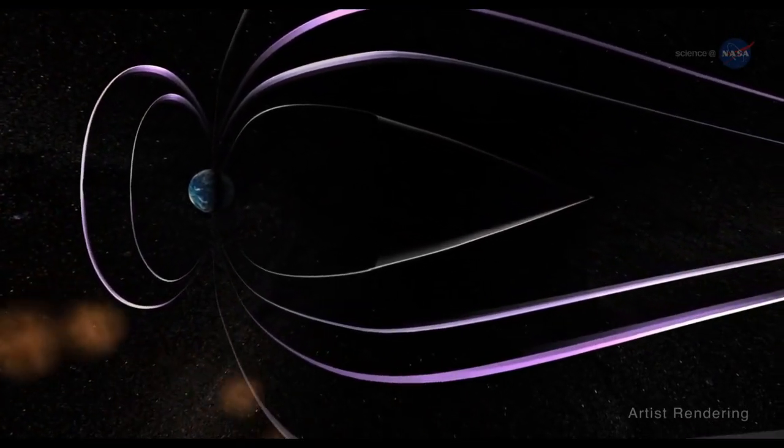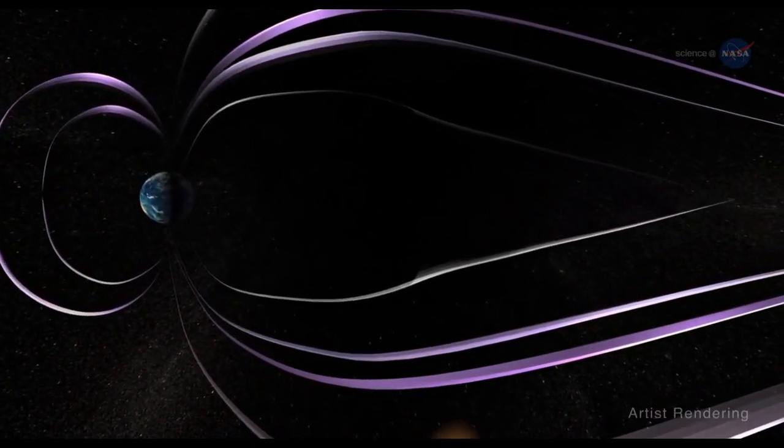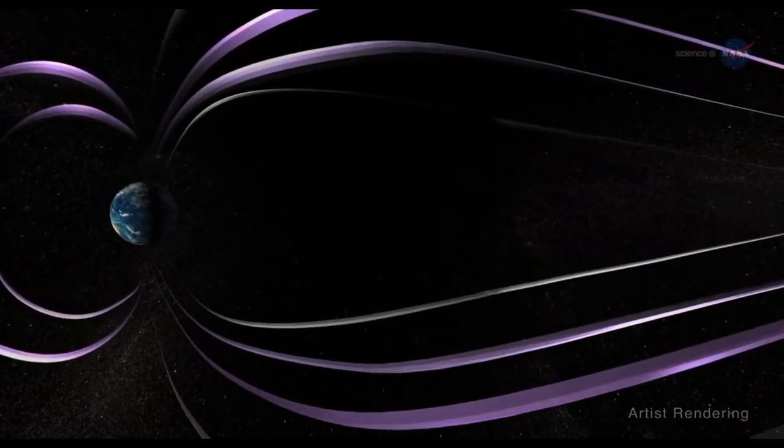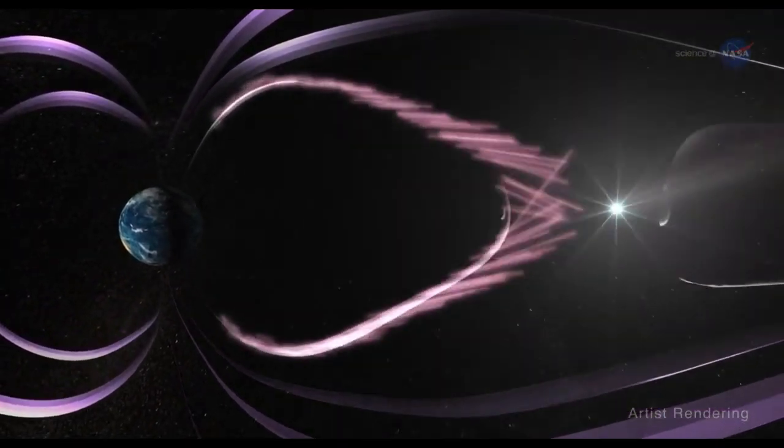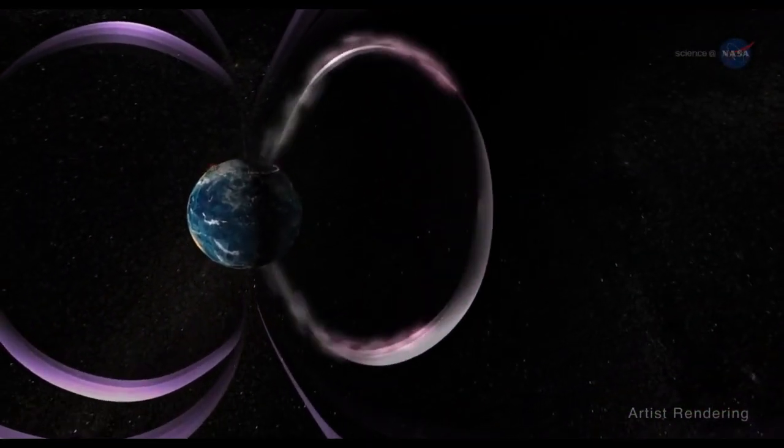Zesta says the Earth's magnetosphere absorbs the incoming energy from the solar wind, and explosively releases that energy in the form of geomagnetic storms and substorms.